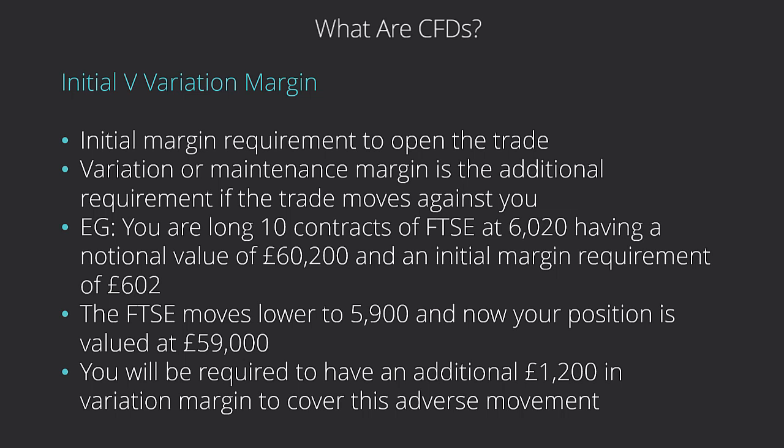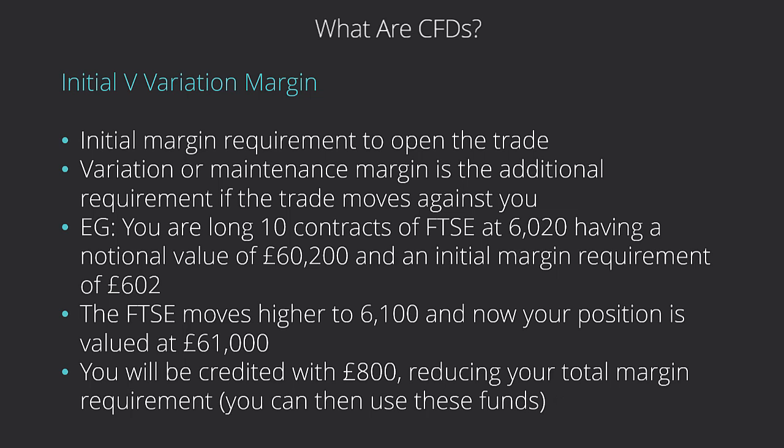It's important to understand that things change as the market or the underlying moves. If we have a quick look at the same example but the market goes up in our favor, we're going to be credited with the difference. So if the market moves up to 6,100 and the position is now valued at £61,000, we're going to be credited with that £800 difference in value at the end of the day — which is different from a stock, where you don't get that until you close the position. This is one of the extra advantages of CFDs, reducing our total margin requirement.